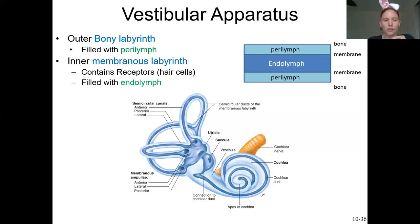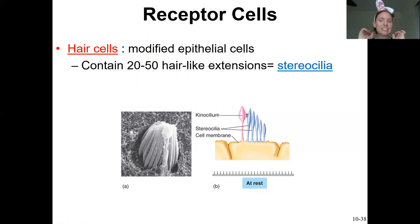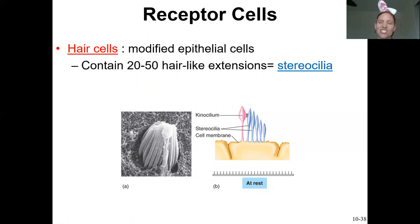The receptor cells are found inside the membranous labyrinth, within the endolymph. The specific type of receptor cells that monitor equilibrium are called hair cells. They are called hair cells because they have little hair-like extensions sticking up from the top of the cell, and those are called stereocilia.